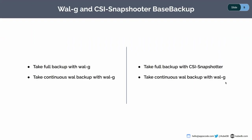Now let's talk about the base backup options in KubeDB. We have actually two options: WAL-G base backup, where we are using WAL-G with our database cluster, and another base backup option is the CSI snapshotter, where we use a feature from Kubernetes external CSI snapshotter which is going to take our database PVC snapshots.